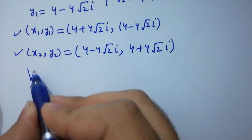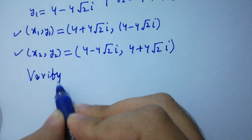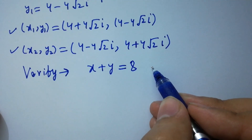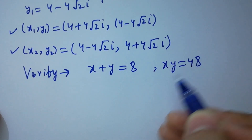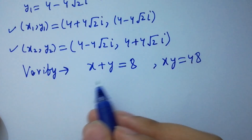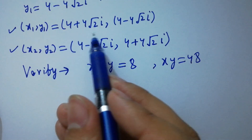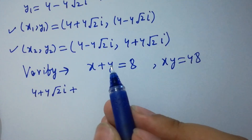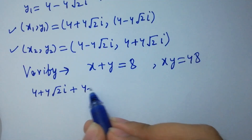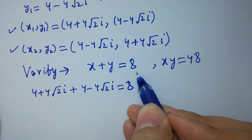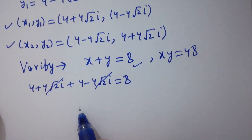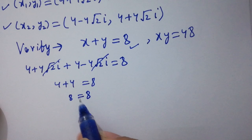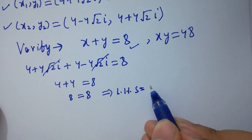In the next step I am going to verify x plus y equal to 8 and xy equal to 48 — equations 1 and 2. Verifying x plus y equal to 8: we have x is 4 plus 4 square root of 2 i, and y is 4 minus 4 square root of 2 i. Adding them, the 4 square root of 2 i terms cancel, leaving 4 plus 4 which equals 8. So 8 equal to 8; left hand side equals right hand side.